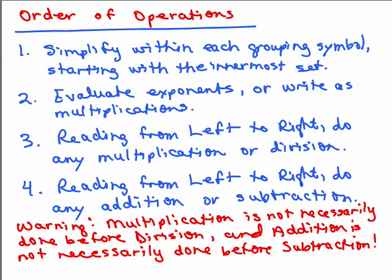Here is the order of operations. First, you simplify within each grouping symbol, starting with the innermost set — that means if there are parentheses, braces, brackets, or any other grouping symbols, you simplify inside those first. Second, you evaluate any exponents, or you could rewrite them as multiplication — for instance, 5 cubed can be written as 5 times 5 times 5. Third, reading from left to right, do any multiplication or division — it's not that multiplication comes first, it's whatever comes first as you read left to right. Fourth, again reading from left to right, do any addition or subtraction. The last thing you ever do is addition or subtraction, unless that's inside a grouping symbol.